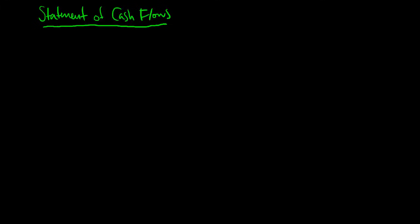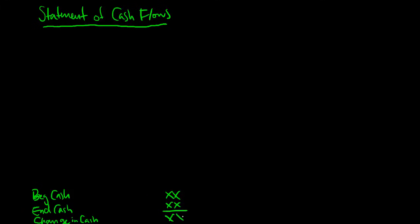When I look at the Statement of Cash Flows, I typically like to go in reverse order. If you look at the Balance Sheet, you have a beginning and ending balance of cash, and that's going to be the very last thing that we see on our Statement of Cash Flows. We have our beginning cash of some value and our ending cash of some value, and the difference between the two is our change. So if we consider beginning cash A, ending cash B, then the change of cash is B minus A. The whole purpose of the Statement of Cash Flows is to see how that cash balance has changed.